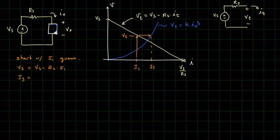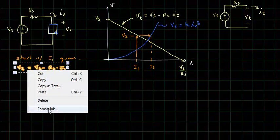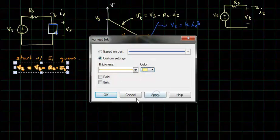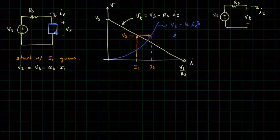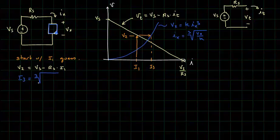We've got to change the color on here to help make it maybe a little more associated with the particular line. Let me rewrite the current in terms of the voltage. It will be the cube root of Vx over K. So we will write I3 will be equal to the cube root of V2 over K.